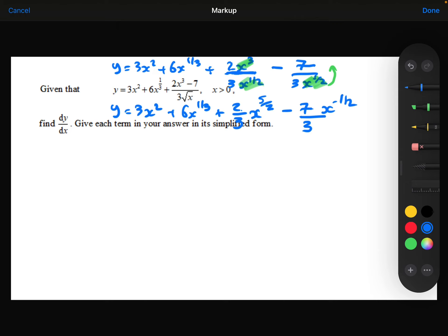Right, now we're ready to differentiate. So the 3x squared will differentiate to be 6x. The 6x to the power of 1 third will differentiate to be 6 times 1 third is 2. 1 third take away 1 is minus 2 thirds.